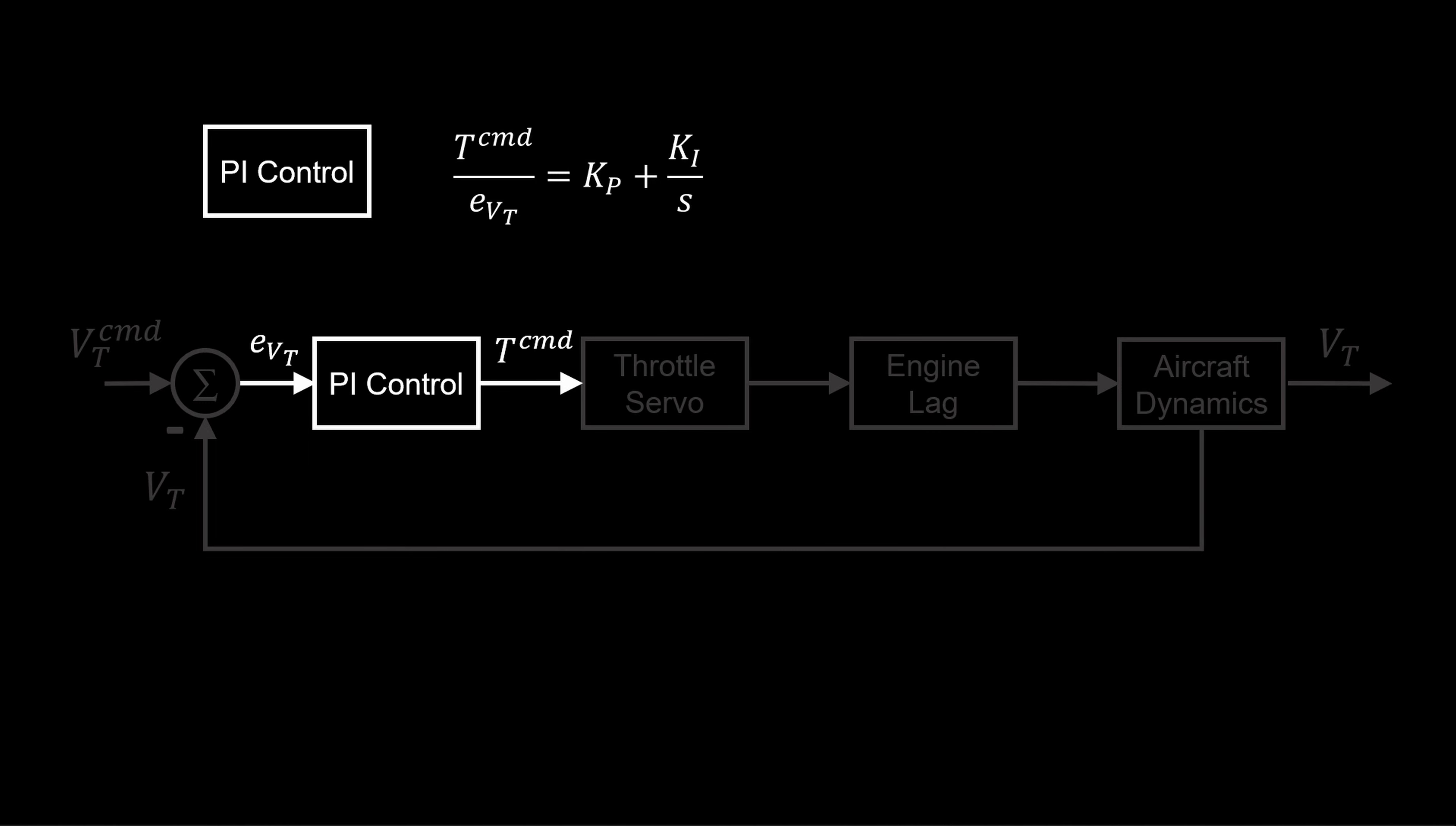A proportional integral gain controller is defined by the gains. It receives airspeed error input and produces a throttle command output.